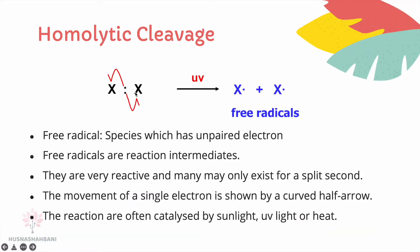In homolytic cleavage between non-polar bonds, the atoms have the same electronegativity, so the bond breaks symmetrically. A bond consists of two electrons, and each electron is divided equally to each atom, resulting in free radicals. Free radicals are species which have an unpaired electron. You have to show one electron at each atom when drawing free radicals.